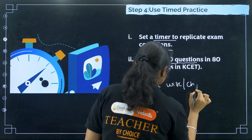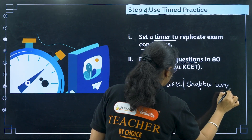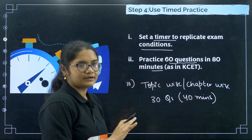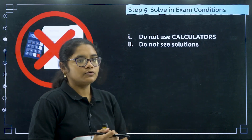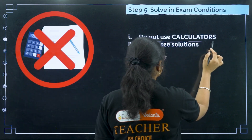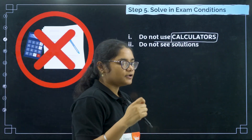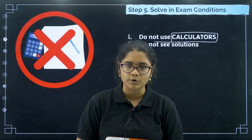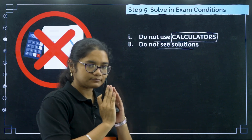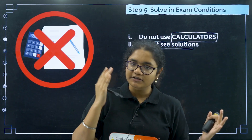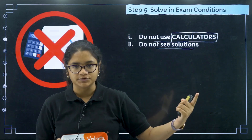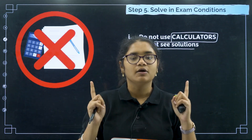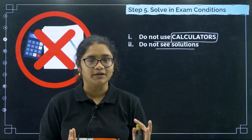For every chapter you can expect around 30 questions, so give yourself 40 minutes for those 30 questions. When solving in exam conditions, you should not use calculators — this is very important because in your PU board you are allowed to use calculators, so most of you are used to them. Avoid calculators while solving KSA questions. Also, do not see the solutions in between — first solve all 30 questions, finish them, then check the solutions. Do not check the solution mid-way and then continue. Solve under proper exam conditions: right time, without calculator, and no solutions in between.